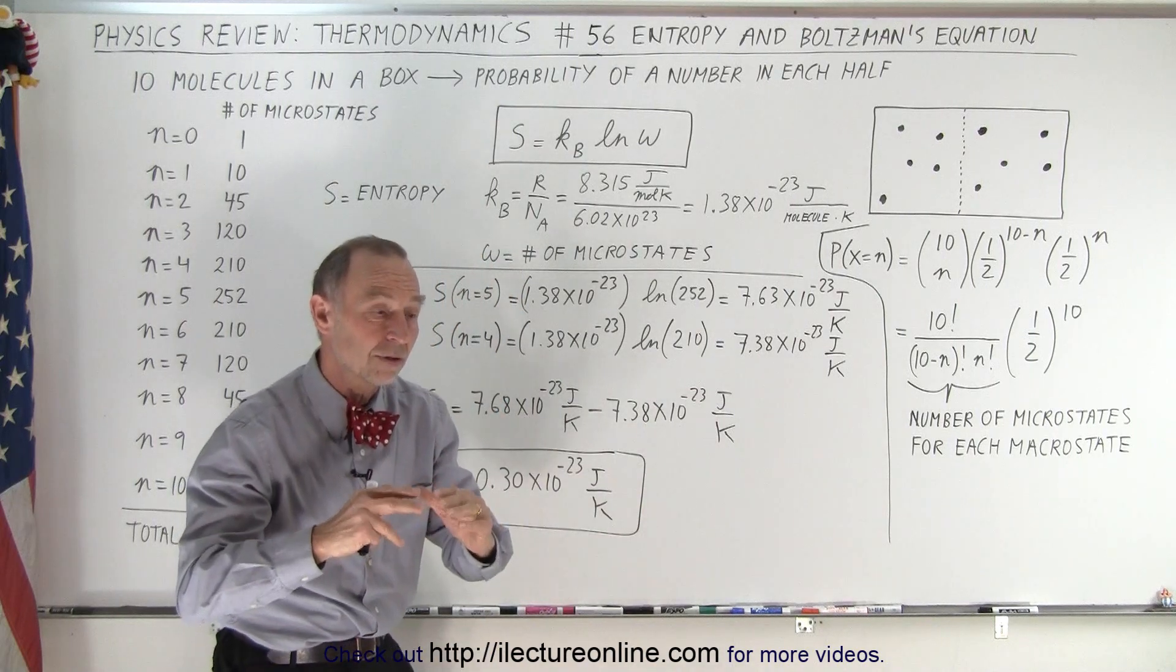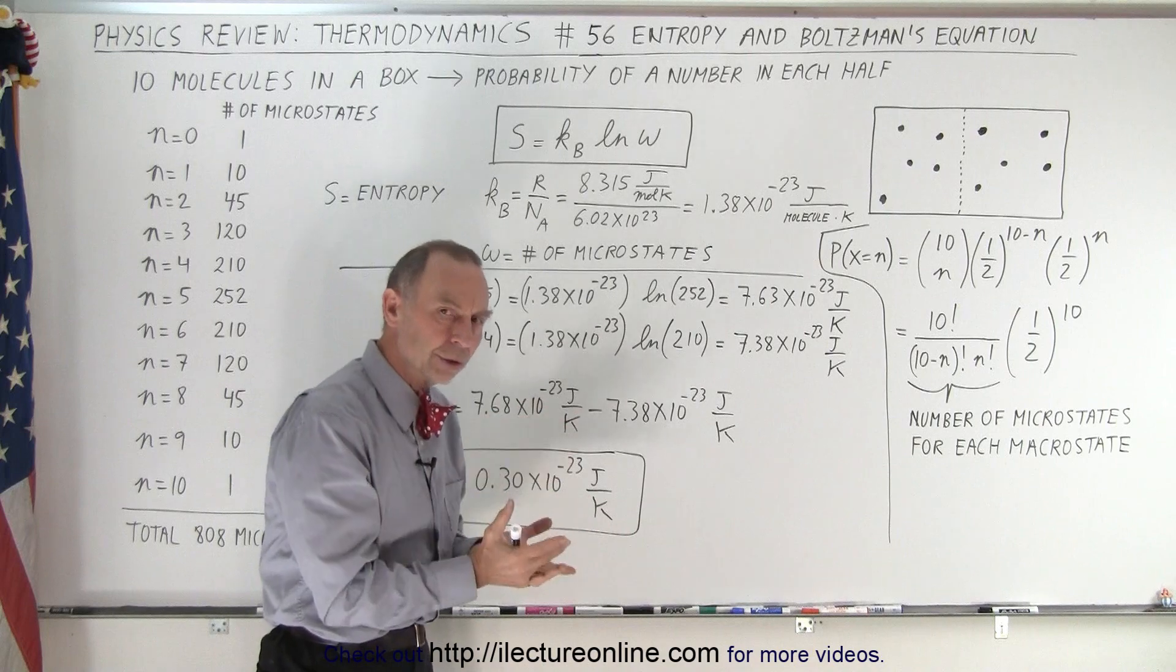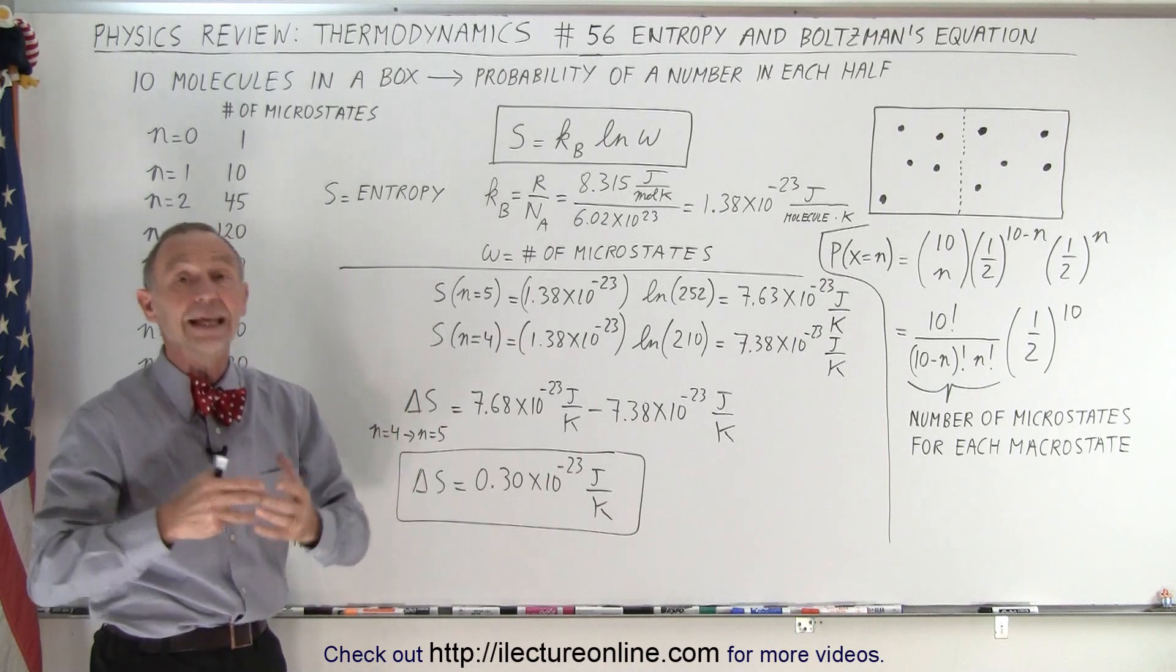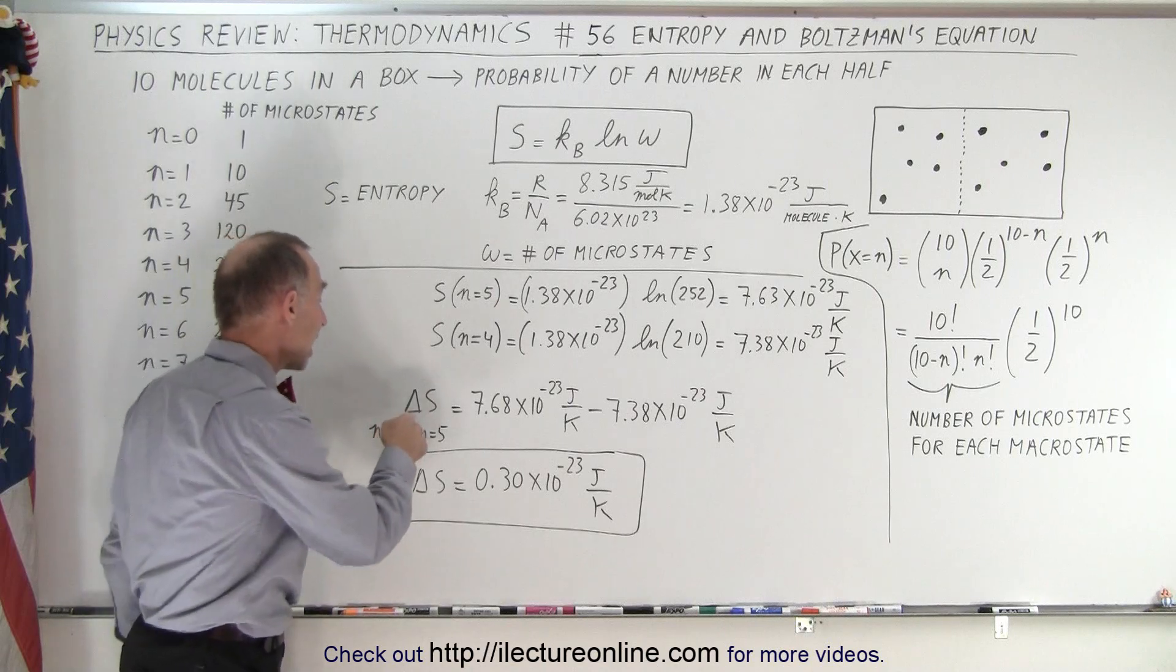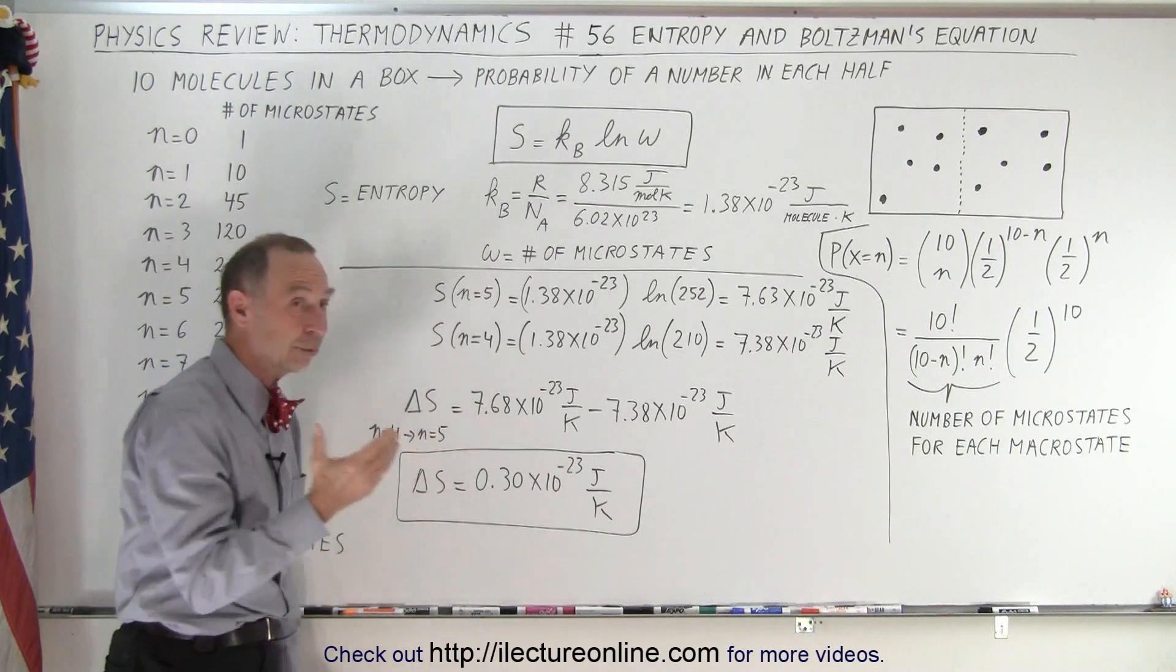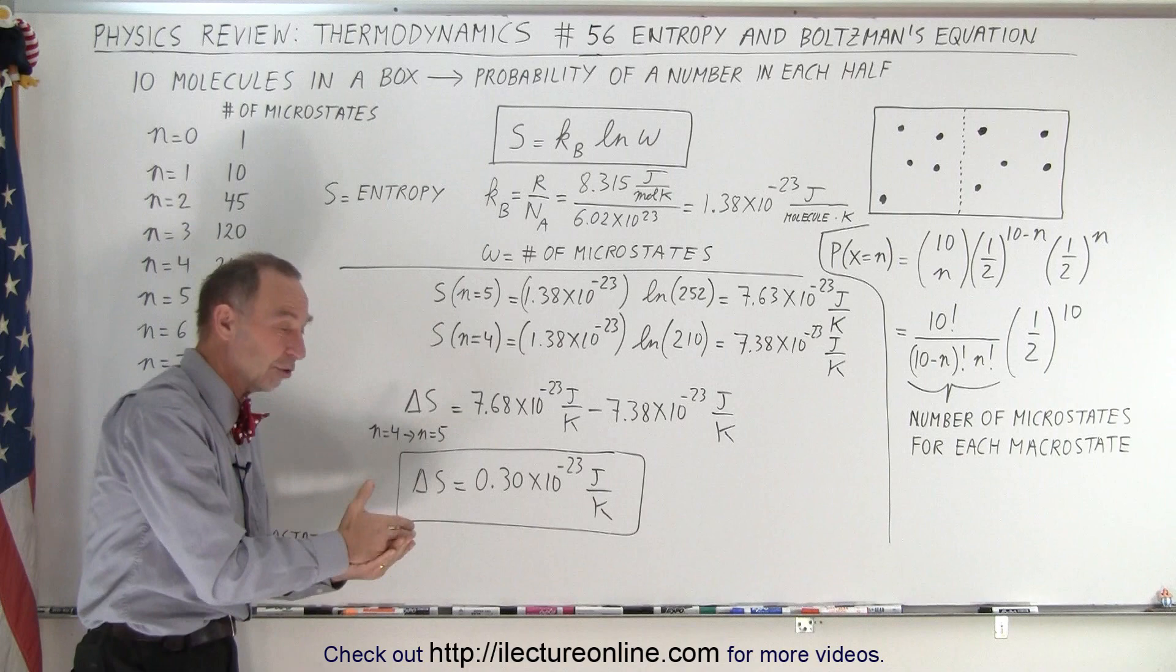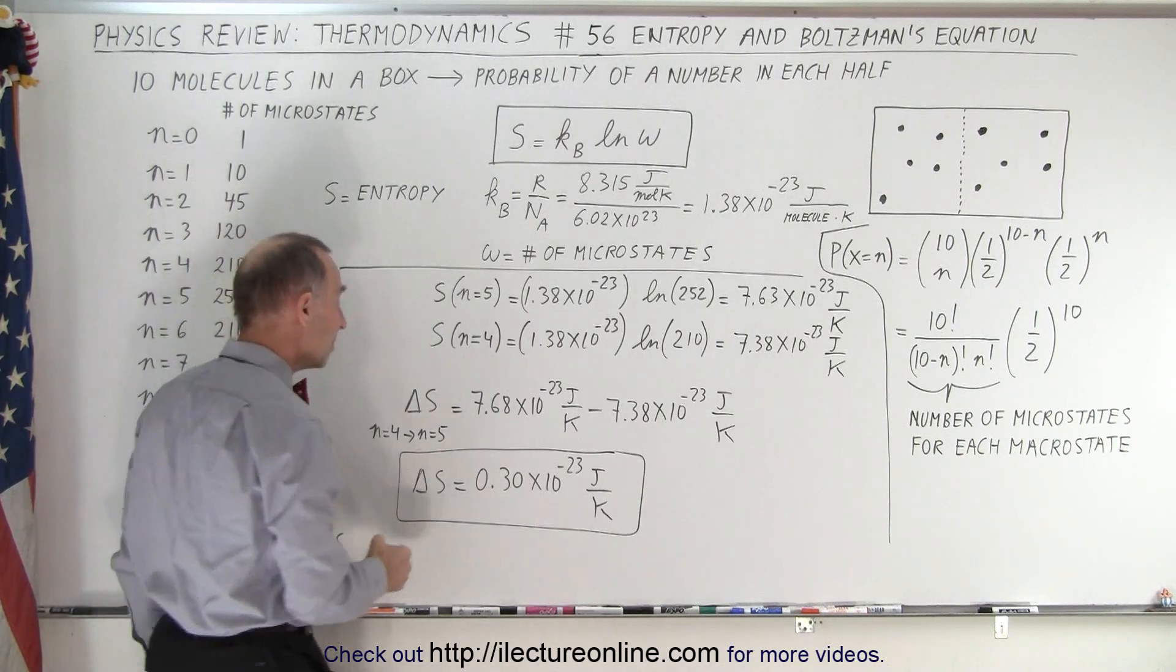Smaller entropy means less random, more order, less disorder. So n equals 4 is a more ordered state than n equals 5. So now the question may be, how does the entropy change when we go from n equals 4 to n equals 5? n equals 4 being a more ordered state to n equals 5 being a more disordered state. And going from an ordered state to a disordered state, we expect the entropy to go up. And that's exactly what we see.